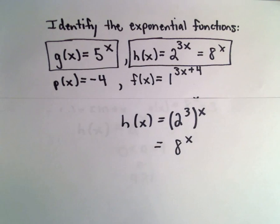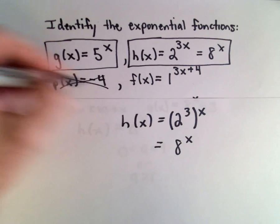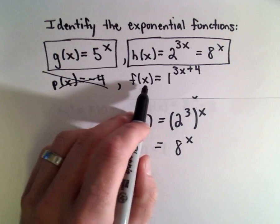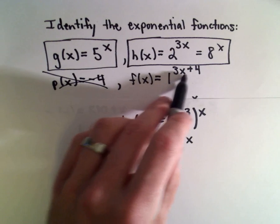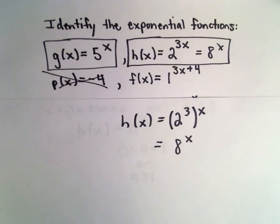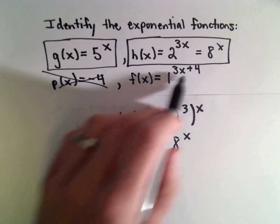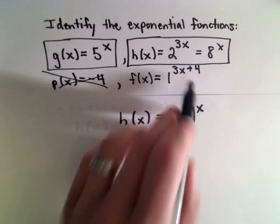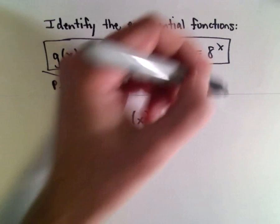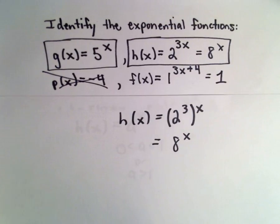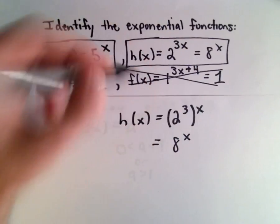Well p(x) equals negative 4. That's just a constant. That doesn't work. Now f(x) equals 1 raised to the power of 3x plus 4. That's sort of right. We've got this number, we've got some variables, and we've got a variable in the exponent, but 1 to any power just equals 1. So that's a constant. So that one doesn't work.